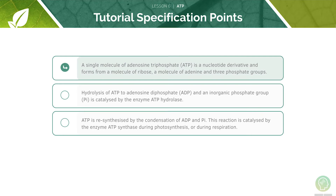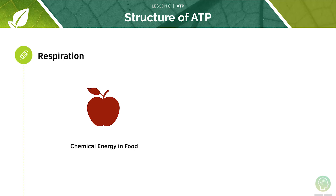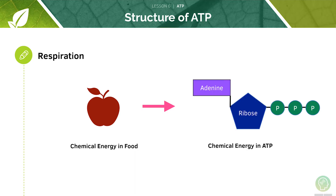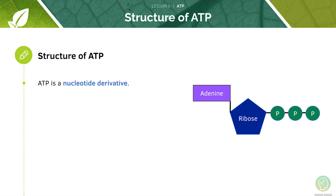Plants and animals obtain energy from the food they eat, particularly glucose, through a process called respiration. The energy from glucose is stored as ATP. During respiration, the chemical energy stored in foods is converted to adenosine triphosphate, or ATP, which stores the energy in a readily available form. ATP is made in the mitochondria, as this is the site of cellular respiration. ATP is a nucleotide derivative, and it is unique as it has three phosphate groups.